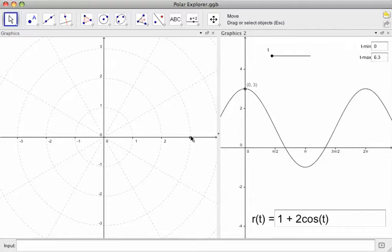Over here on this graph, we're going to create the polar graph. So you can see that when the angle is 0, so we're on the positive x-axis, the radius is 3, so we're 3 away.